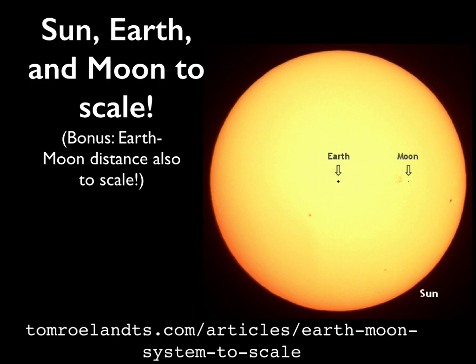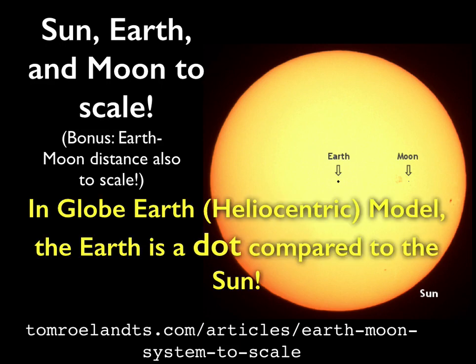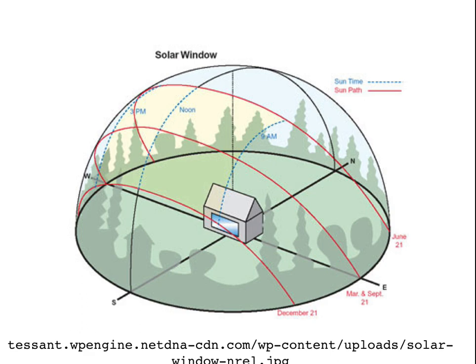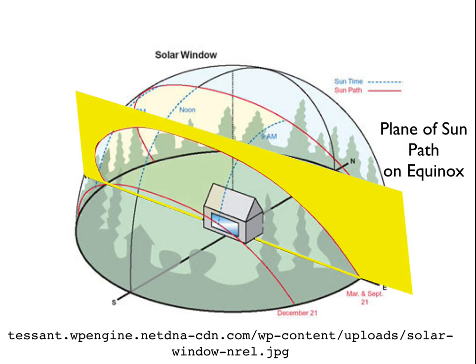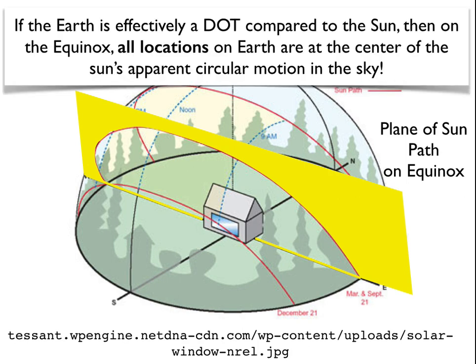Here's a picture of the Earth, Sun, and Moon to scale. In the heliocentric model, the Earth is essentially a dot compared to the Sun. So it doesn't matter if you're at the North Pole, South Pole, equator, or anywhere in between — you're essentially at a point in space. On the equinox, being that the Earth is essentially a dot, all locations on Earth are at the center of the Sun's circular motion. So the Sun is tracing a circle in the sky, and every observer on Earth is at the exact center of that circle.